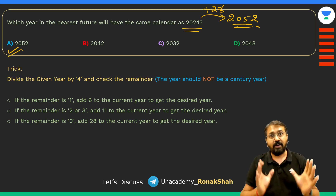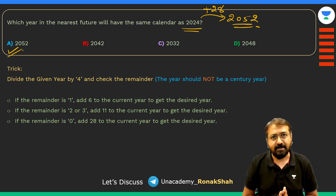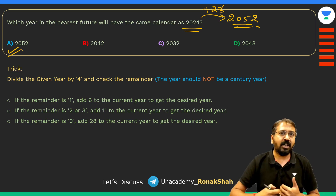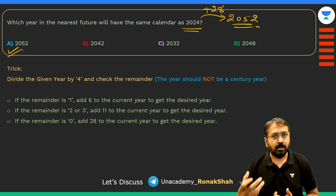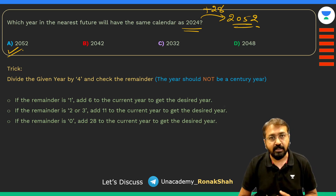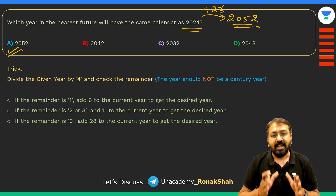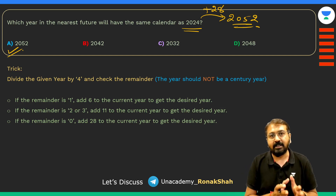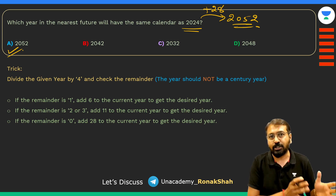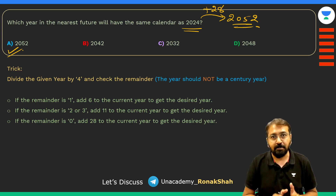I hope you have understood this concept. If you have learned about calendars before, you would know that the calendar moves forward by the number of odd days, and this trick completely works on that calculation of number of odd days — which I have simplified for you.